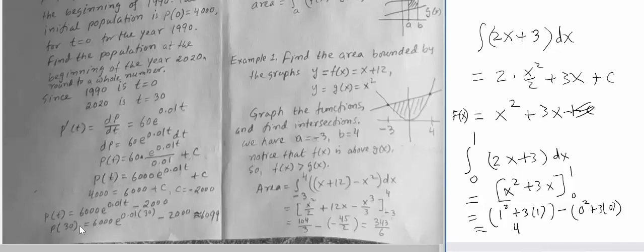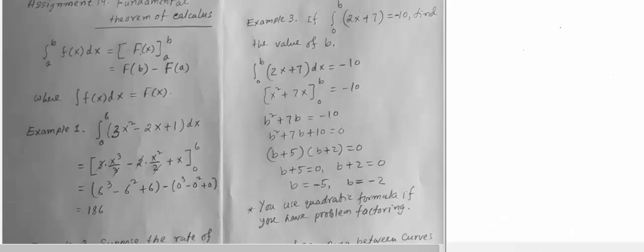Next we take example number 3. It is given that the integral that goes from 0 to b of 2x plus 7 is negative 10, so we need to find what is b.